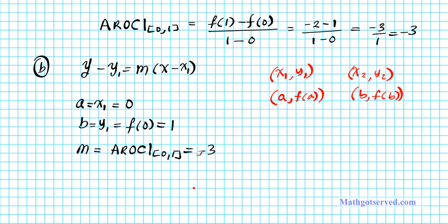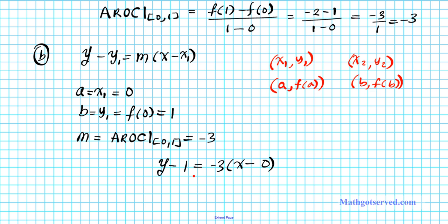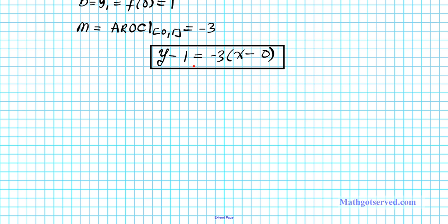So we have everything we need to write down the equation of our secant line. The equation of our secant line will be y - 1 = -3(x - 0). So this is the answer in point-slope form. If you wanted to write this in slope-intercept form, you just simply get y by itself. So you have y = -3x + 1. They both are the same thing, but just in different forms.